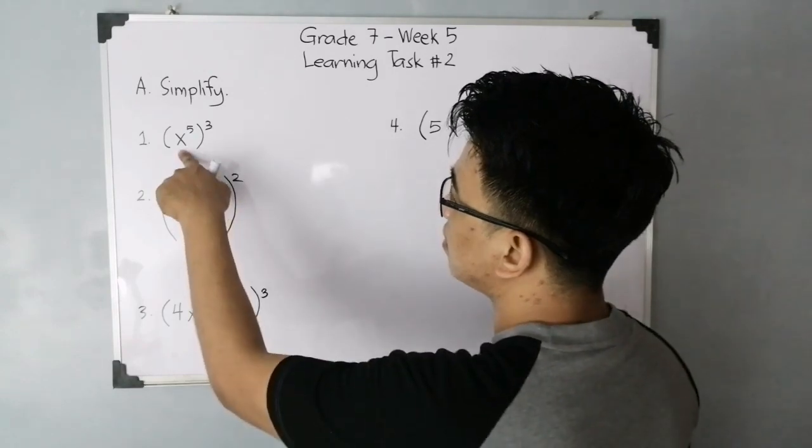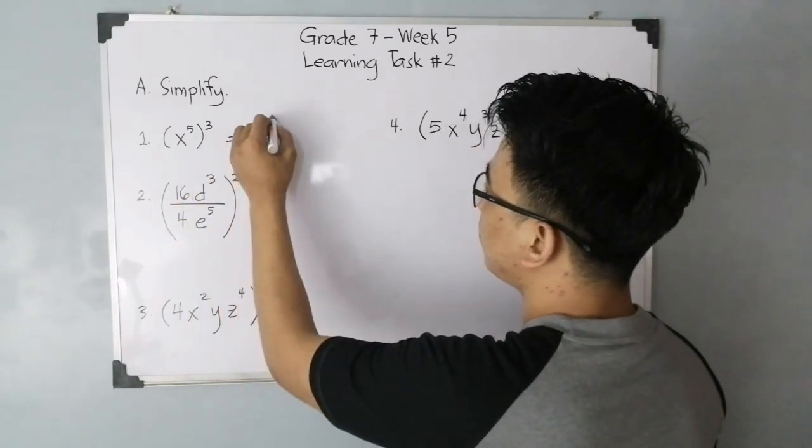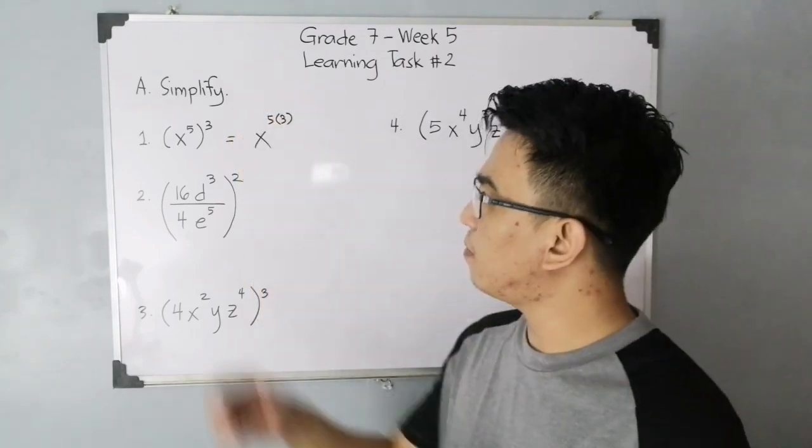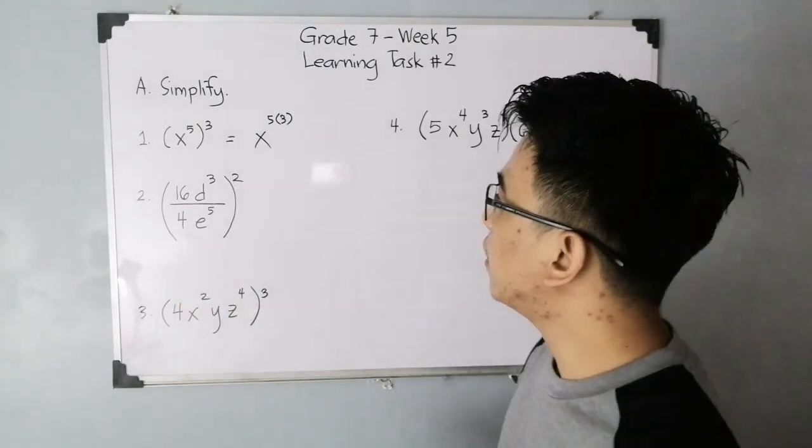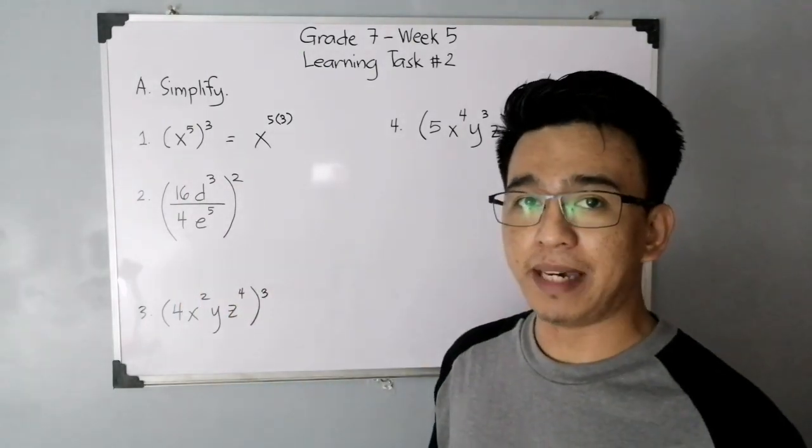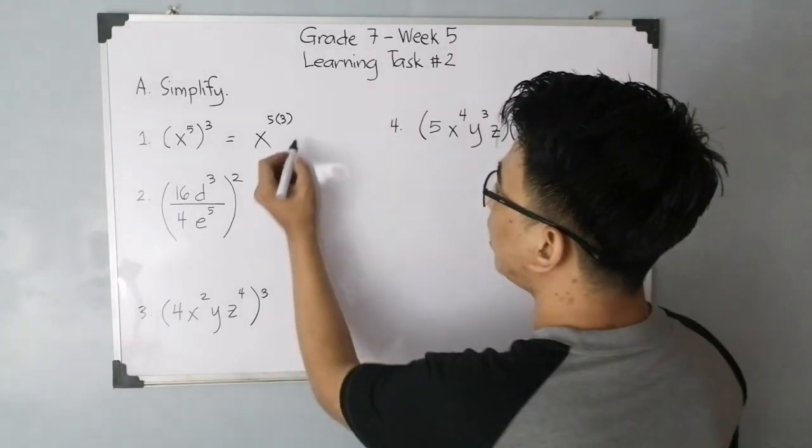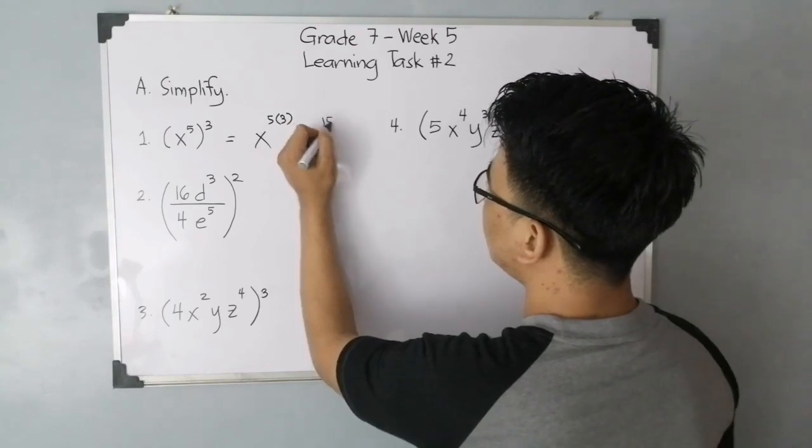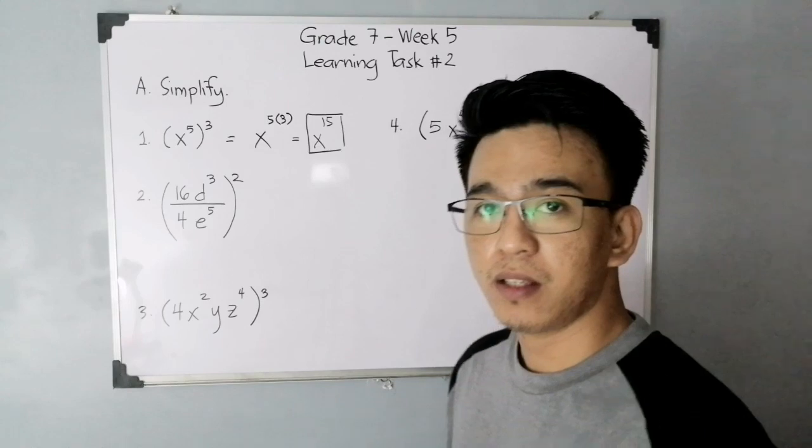The law of exponent we'll use is simply the power rule. How is the power rule done? All you need to do is multiply the exponents. If you have the base of x, you need to copy the variable x and then simply multiply 5 times 3. In this type of expression, you will be applying the power rule. Copy the base and multiply the exponents. Simplifying this exponent, it will give you x raised to 15. That's how simple item number 1 is.